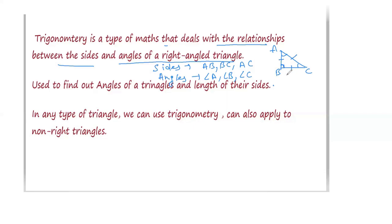In a right angle triangle, angle B equals 90 degrees — so one of the angles is 90 degrees. It may be angle A, angle B, or angle C; that depends upon how you are making the triangle and how you are placing the alphabets on the particular vertices.